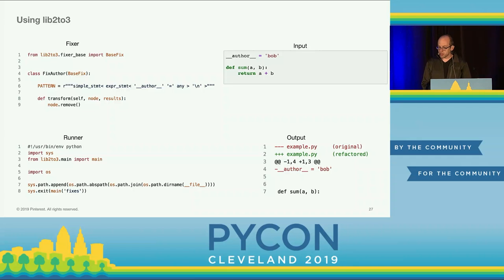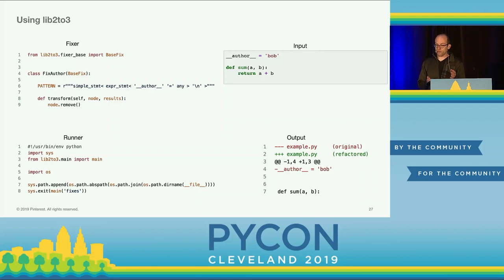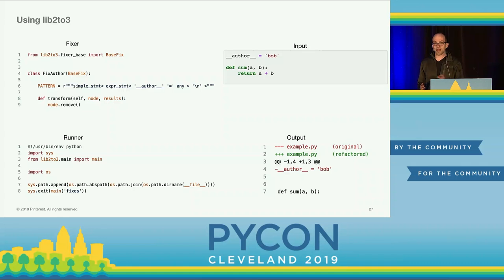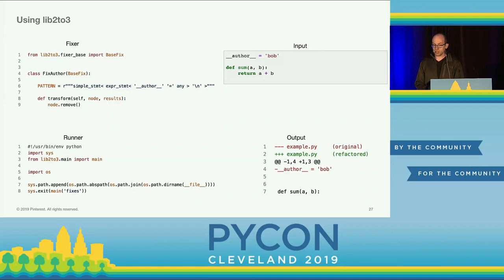Going back to our author tag removal example — with input 'author = Bob', here's the lib2to3 fixer. We use a pattern that looks for a simple statement with an expression statement assigning to 'author' equals anything, including a trailing newline character to also remove the newline. Note that this naive version doesn't handle extra spaces in 'author =' — we could handle that but the transformation would get more complex. Also note the runner requires some path injection because lib2to3 assumes fixers are named like 'fix_author' and looks up the module automatically.